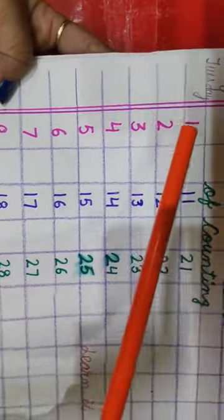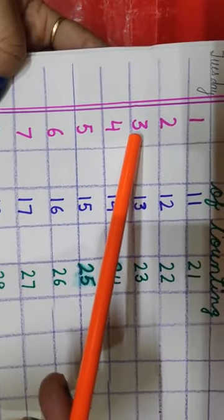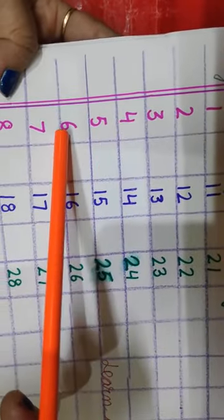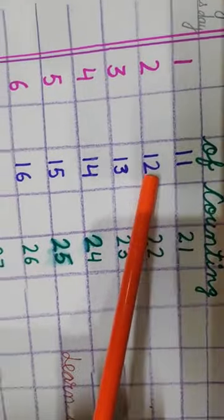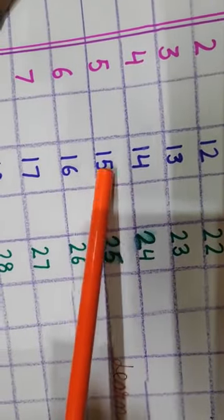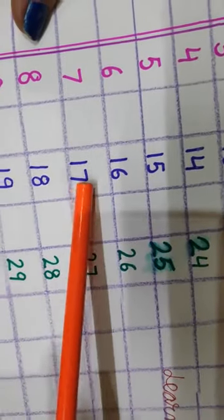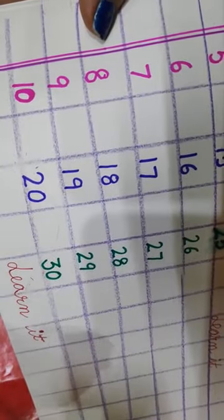Now once again. 1, 2, 3, 4, 5, 6, 7, 8, 9, 10. 11, 12, 13, 14, 15, 16, 17, 18, 19, 20.